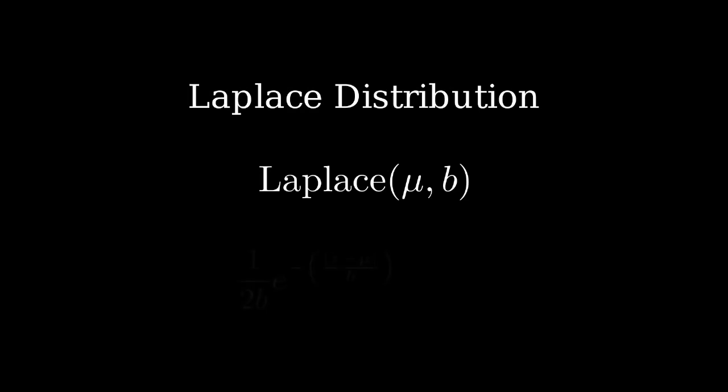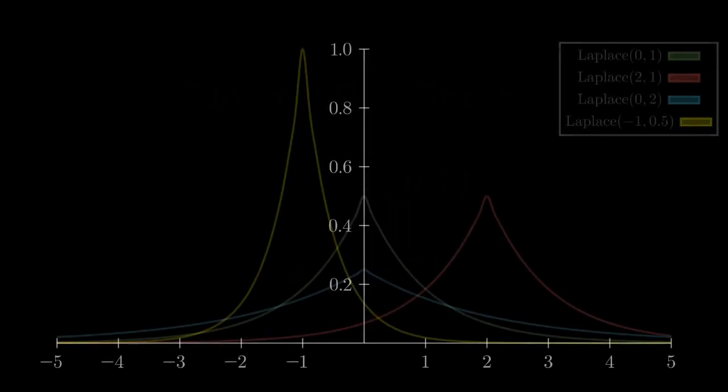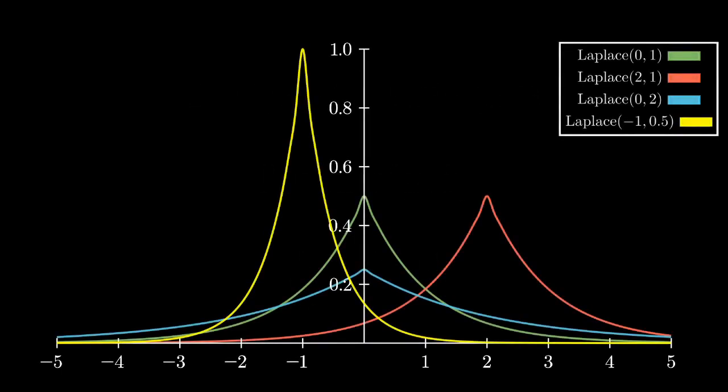The distribution has a different PDF, which looks somewhat similar to the normal distributions, but when plotting it, you can see a distinctly different shape with more density near the mean.